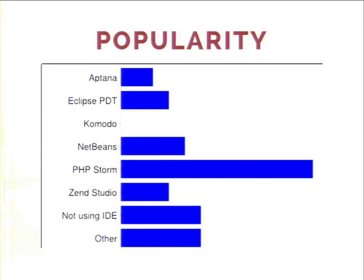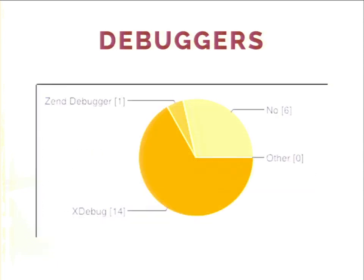The second question in my contest was whether people are using debuggers. The result was pretty much yes, because most people are using Xdebug. Some people were using Zend Debugger. That is a really interesting result, because there are fewer people using Zend Debugger than people using Zend Studio. It doesn't make sense to me, because I think Zend Debugger is the main reason to choose Zend Studio.